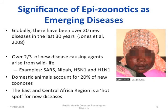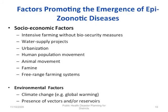Factors promoting the emergence of epidemic-prone zoonotic diseases include socio-economic factors like intensive farming without biosecurity measures, water supply projects, urbanization, human population movement, animal movement, farming, and free-range farming systems. Environmental factors include climate change such as global warming, presence of vectors, and reservoirs.